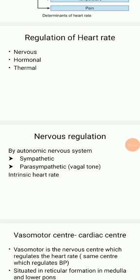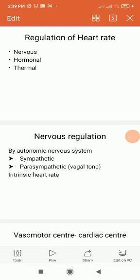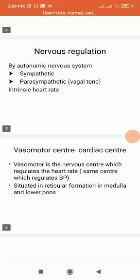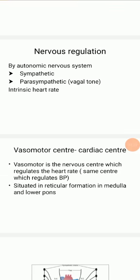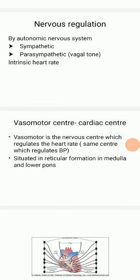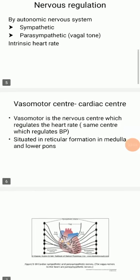A constant heart rate is maintained by the balance of sympathetic and parasympathetic nervous systems. The heart has a continuous inhibitory influence of the vagus, known as vagal tone. The group of nuclei present in the medulla and lower pons which regulates blood pressure and heart rate is called the vasomotor center, situated in the reticular formation of the medulla and lower pons.